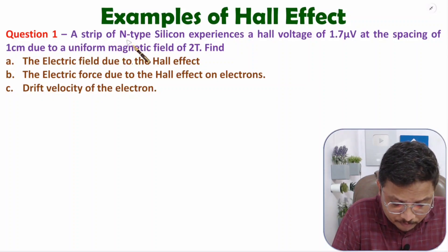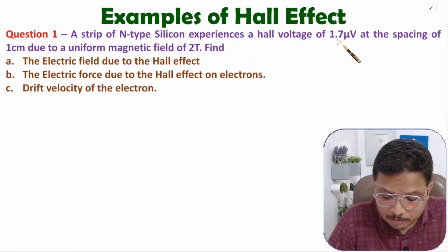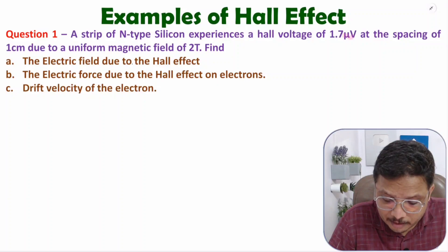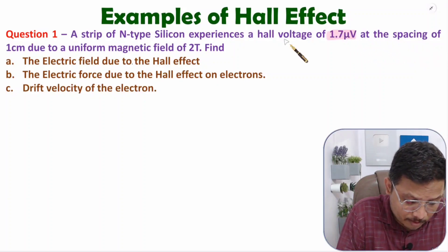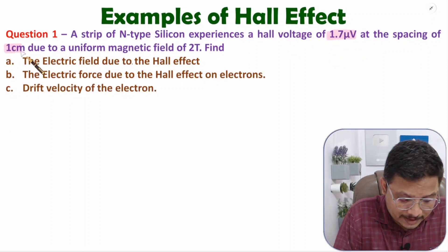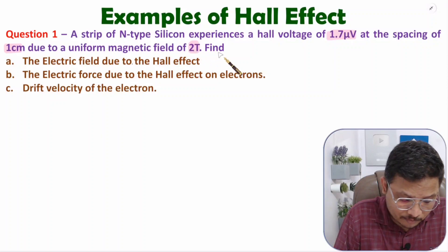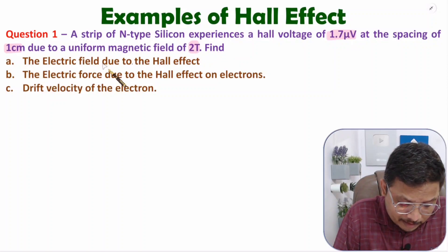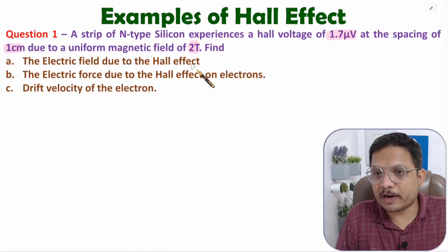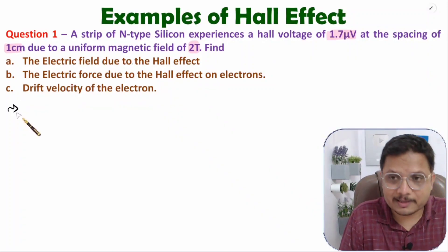Let us start with Example 1. The question is: a strip of N-type silicon experiences a Hall voltage of 1.7 microvolt at a spacing of one centimeter, due to a uniform magnetic field of 2 tesla. Find the electric field due to the Hall effect. First we need to find the electric field, so you should know what is electric field.